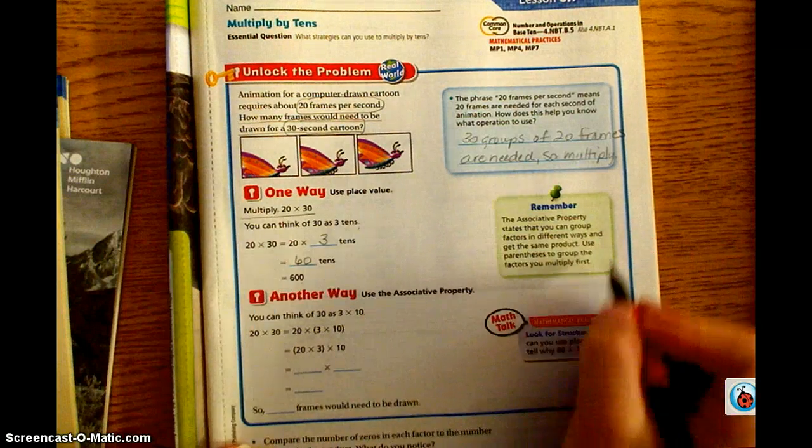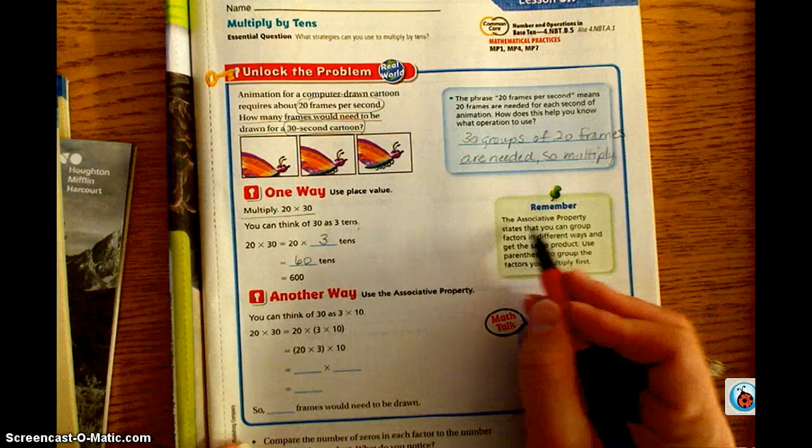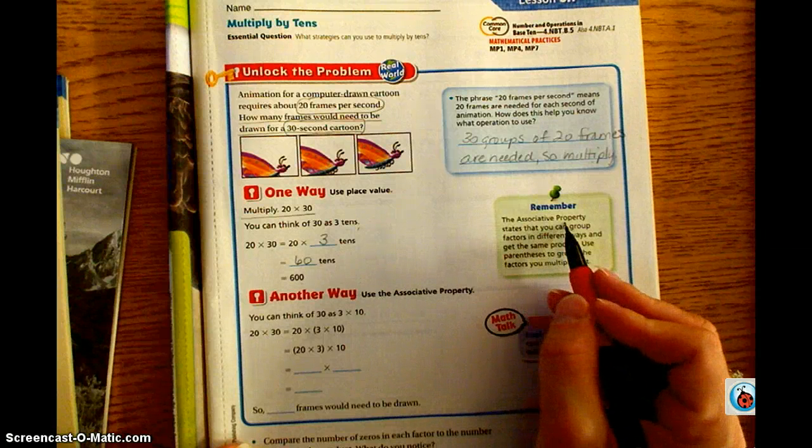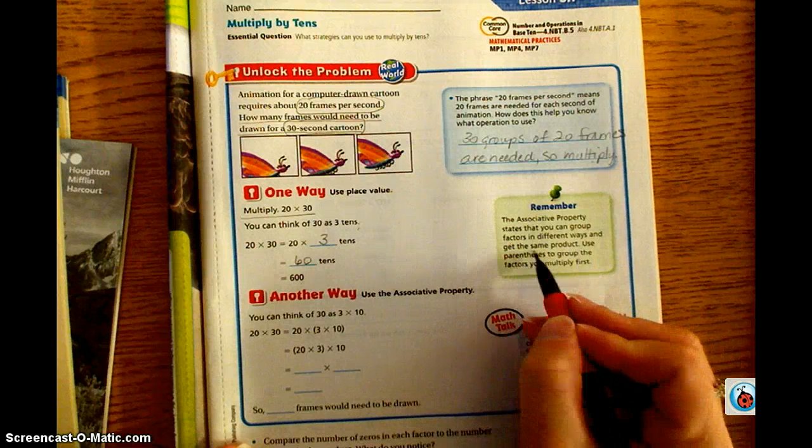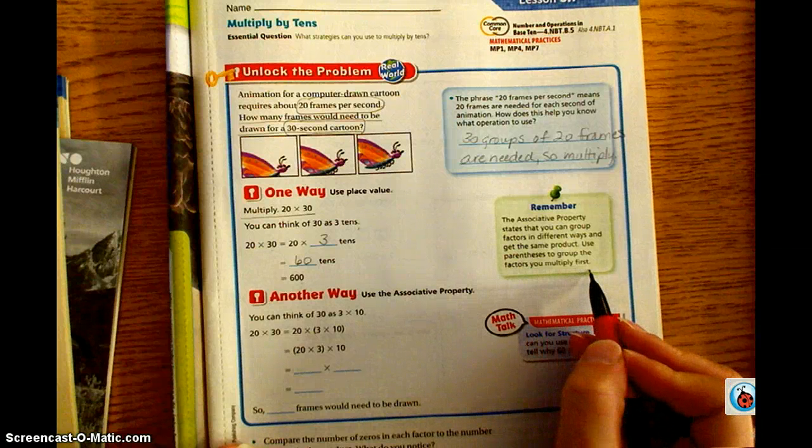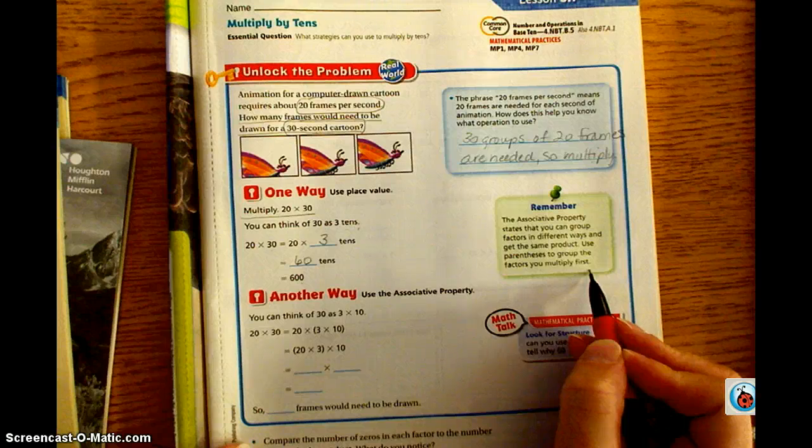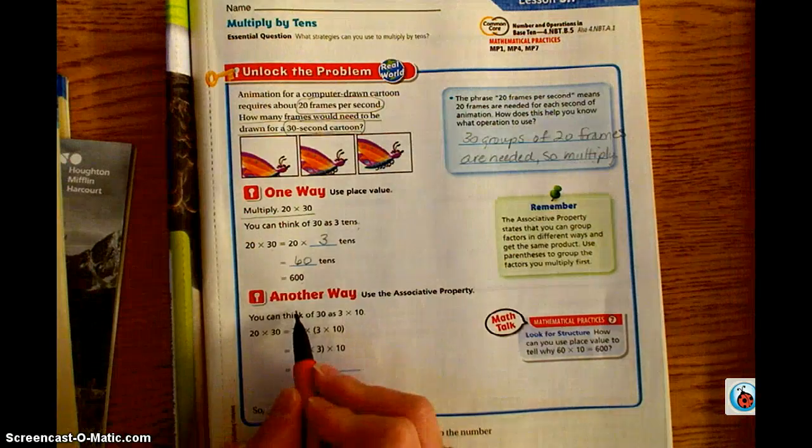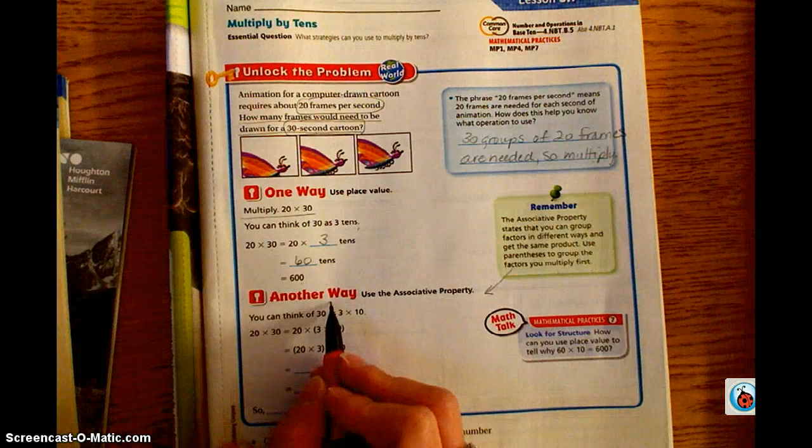Over here there's another reminder. Remember, the associative property states that you can group factors in different ways and get the same product. Use parentheses to group the factors you multiply first. If you remember from order of operations, multiplication is going to be the first operation that you perform. This ties into our associative property way, which is right down here that we're going to do next.